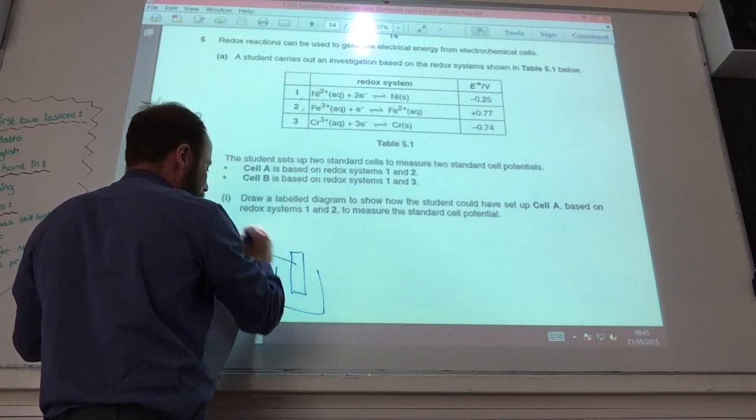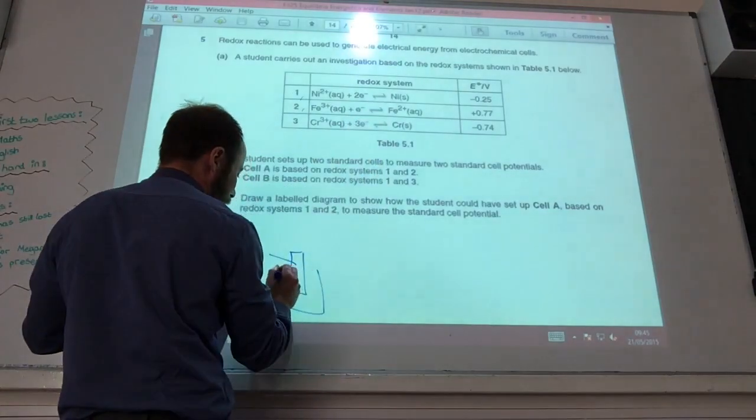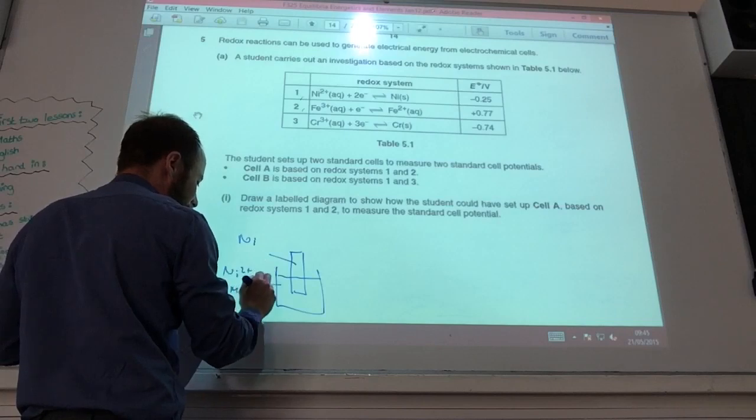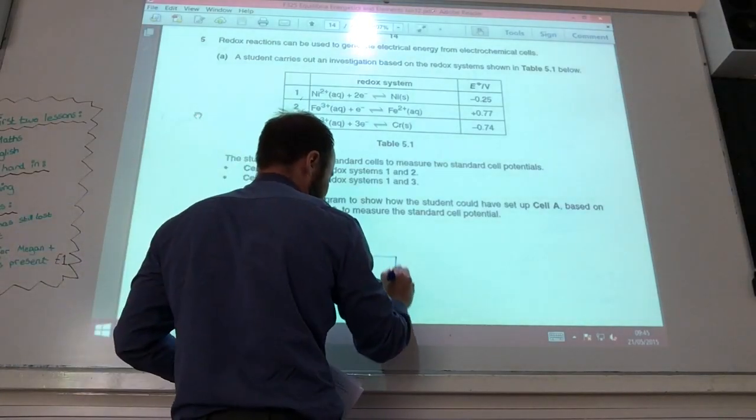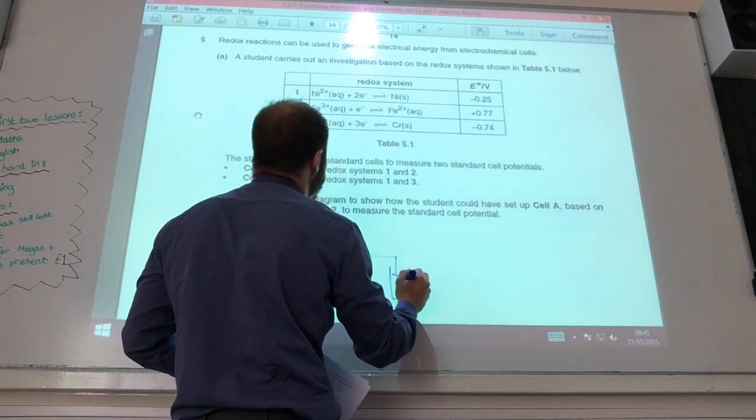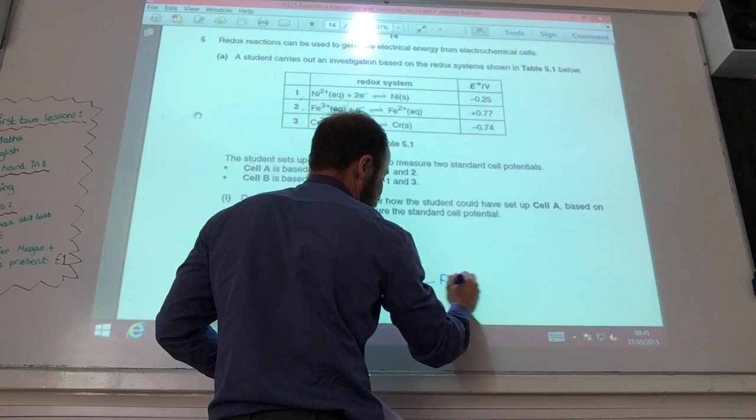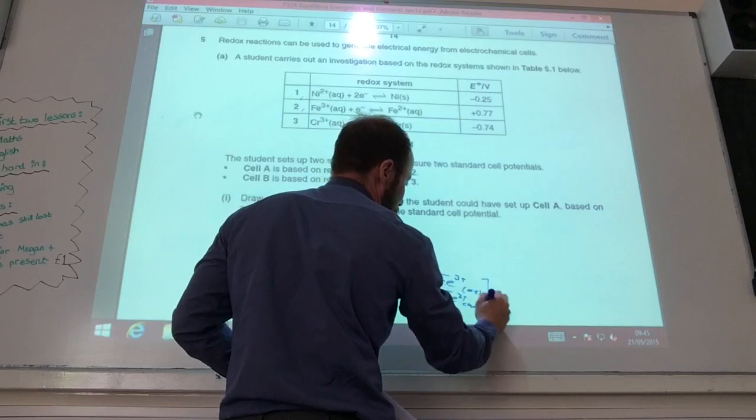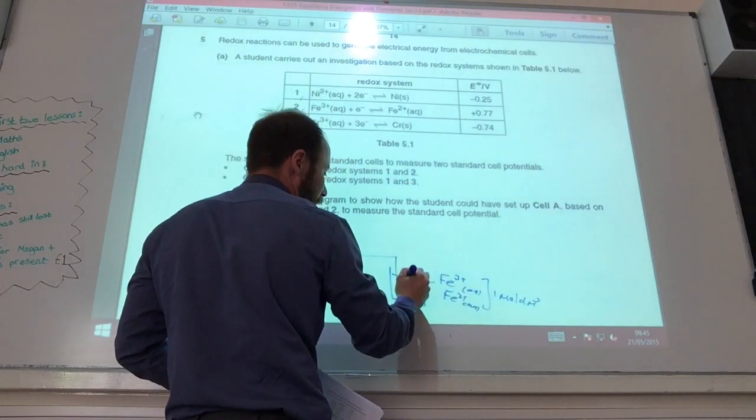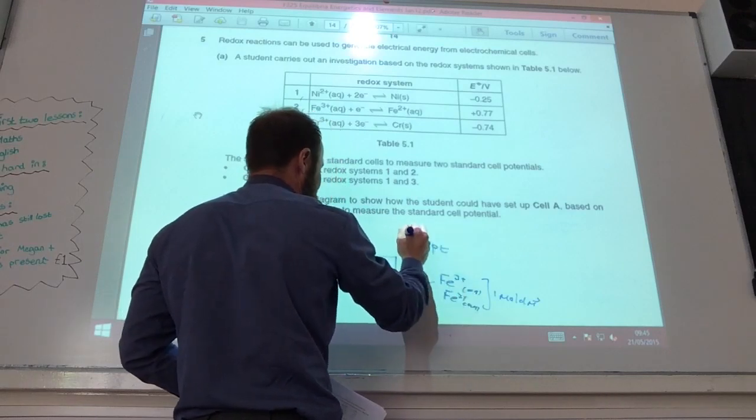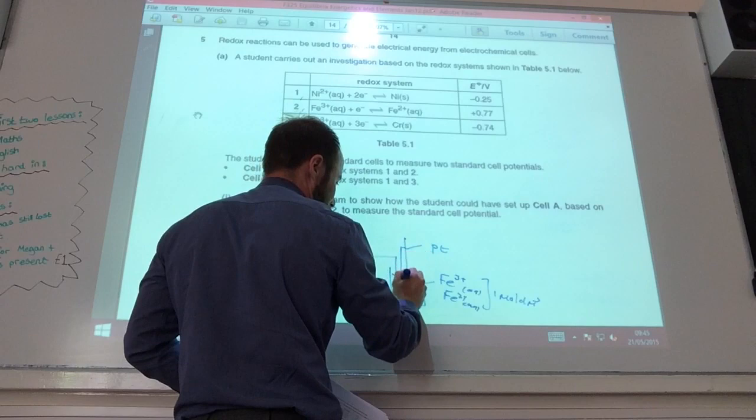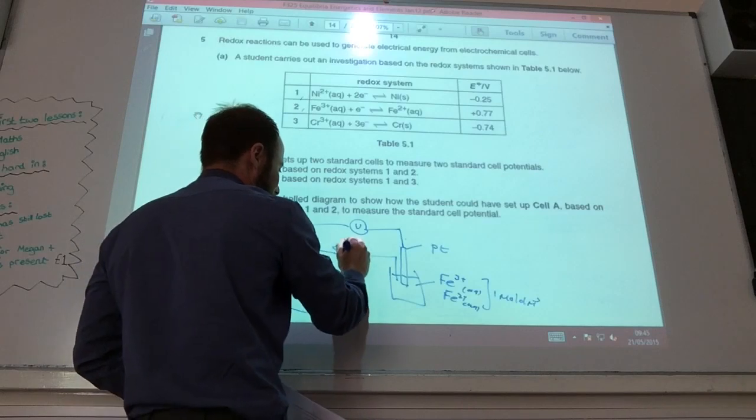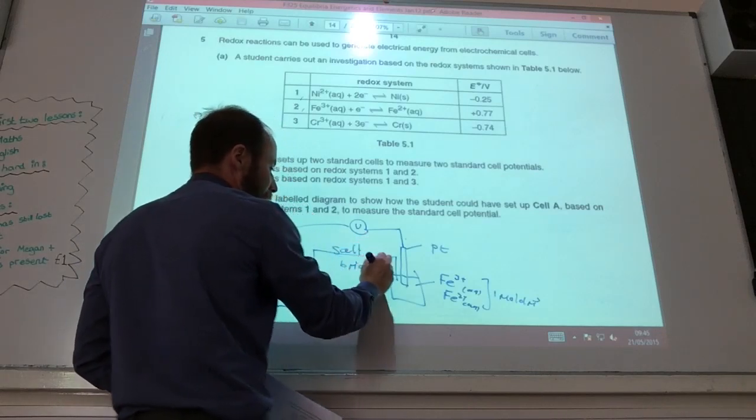If you notice I can use nickel as the electrode, it's solid. In here I'm going to have nickel 2 plus aqueous and that's going to be 1 mole per decimetre cubed. In my other beaker, you'll notice it's actually got Fe3 plus aqueous and Fe2 plus aqueous. Both of those are going to be 1 mole per decimetre cubed, so I need to use a platinum electrode for that. Then we connect them up with a voltmeter like so and of course that is my salt bridge.